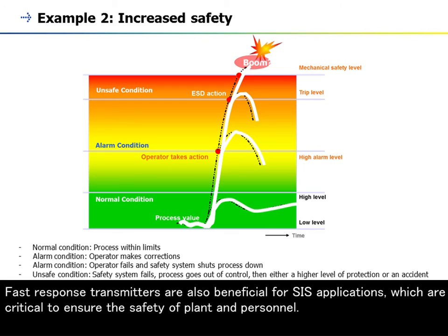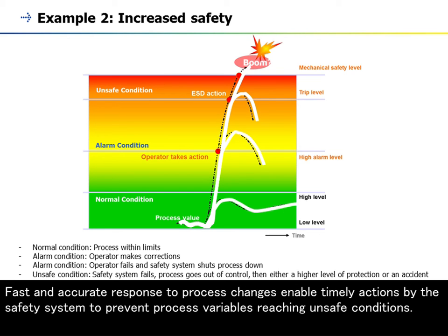Fast response transmitters are also beneficial for SIS applications, which are critical to ensure the safety of plant and personnel. Fast and accurate response to process changes enable timely actions by the safety system to prevent process variables reaching unsafe conditions.